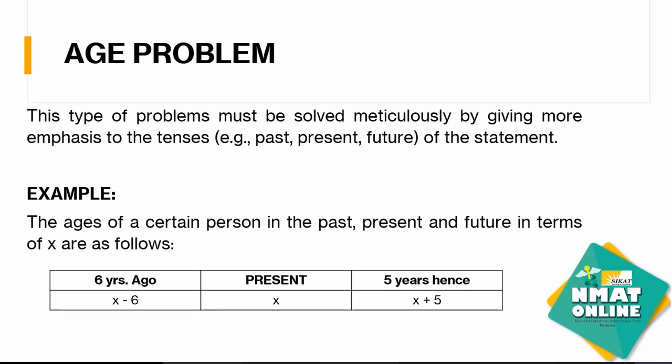We'll start off with the different types of problems. We have the most common: age, mixture problem, and work problem. In the age problem, this is typically a type of problem that needs more emphasis on the tenses of the verb — your common past, present, and future, according to how it is stated in the problem.